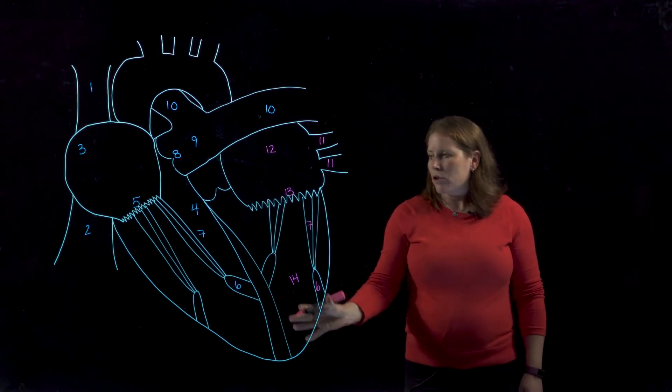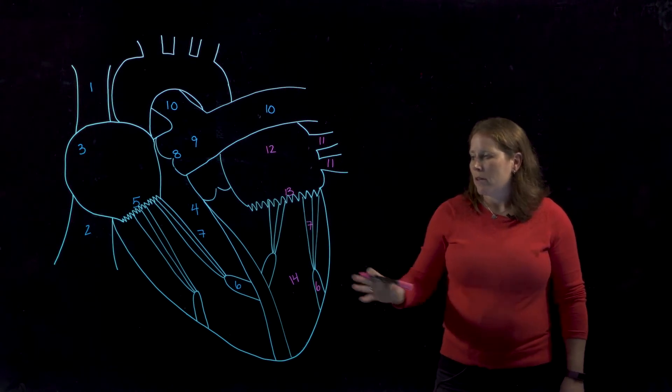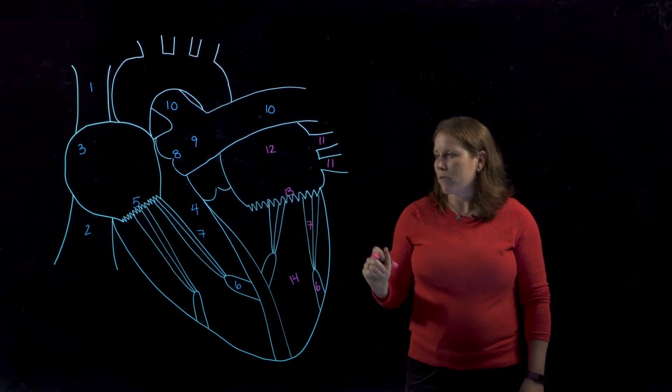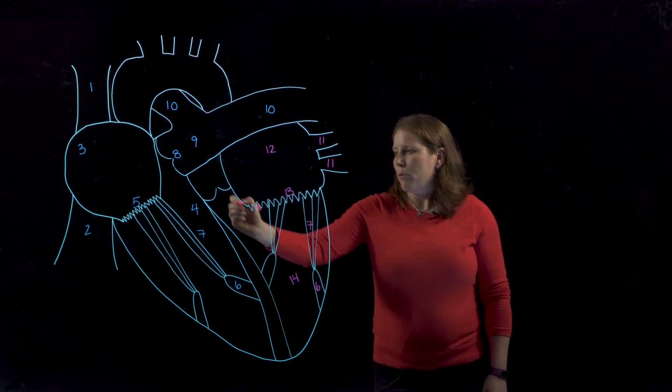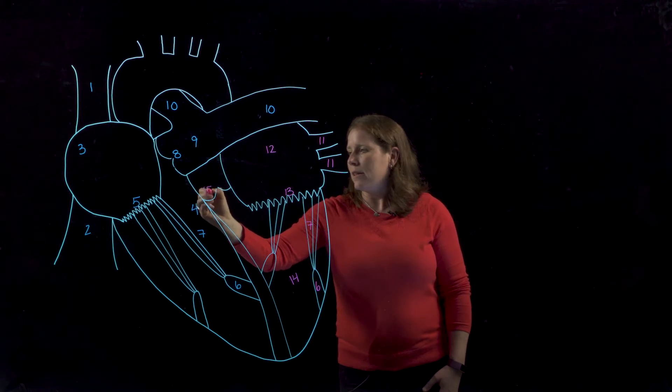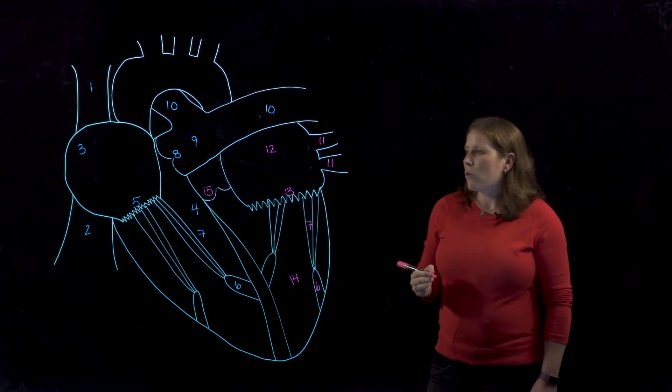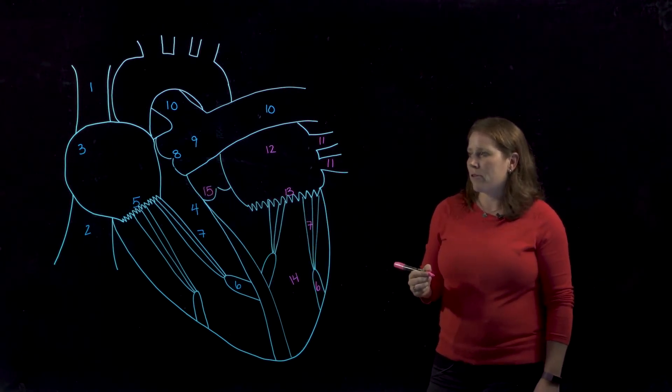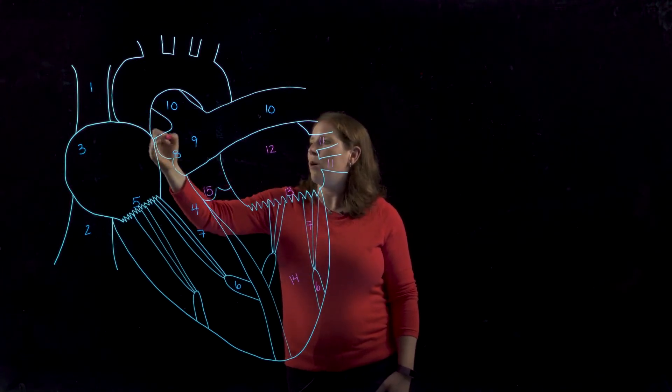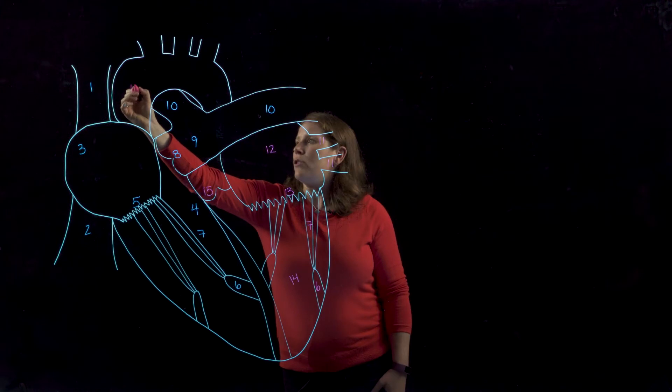When the heart contracts from the bottom up, the left ventricle, which is a very strong muscular ventricle, will push blood through the next semilunar valve, which is our aortic semilunar valve. This will actually allow blood to pass behind this pulmonary trunk and into the aorta.